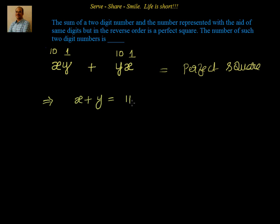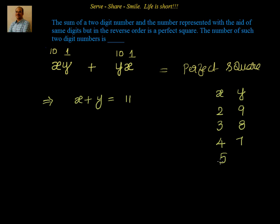We will start with x equal to 2: y will be 11 minus 2, which is 9. If x equals 3, y will be 8. If x equals 4, y will be 7. If x equals 5, y will be 6. Similarly, if x equals 6, y will be 5. If x equals 7, y will be 4. If x equals 8, y will be 3.